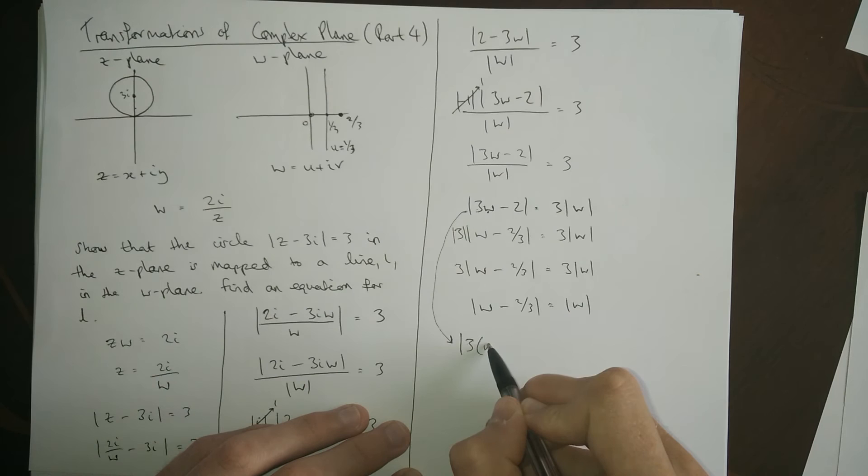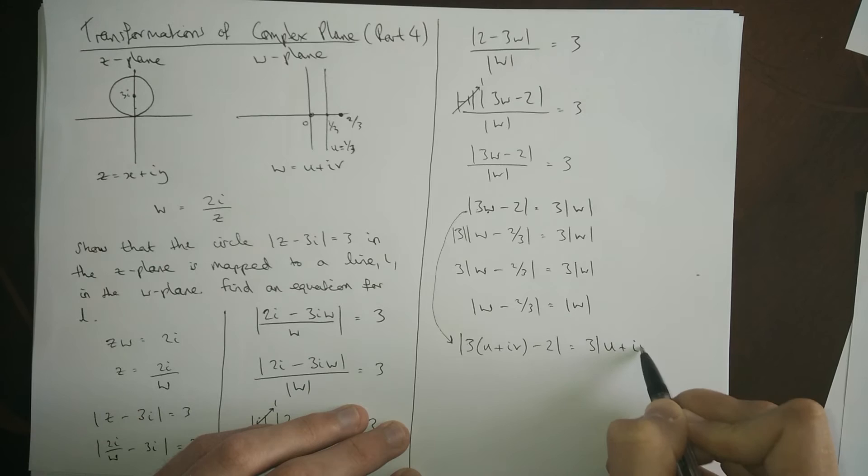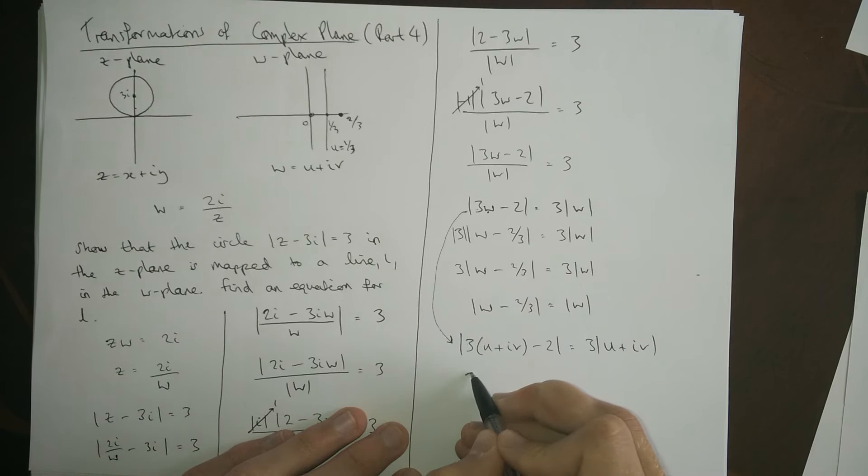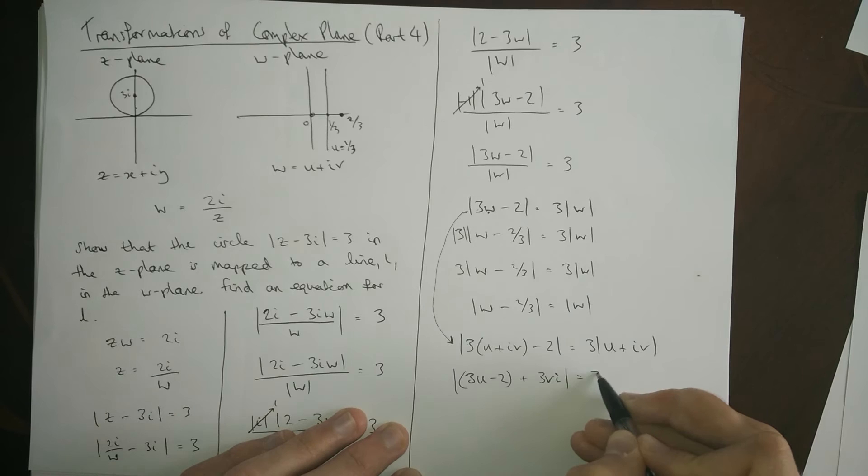So, we take the W, we change it for u plus iv. And we change this W to be u plus iv. We then do the moduluses. Well, before that we need to group together here the real imaginary terms. So, we've got 3u minus 2 is one of the terms. And over here we've got plus 3vi as being the other term. Just here we've got 3 times u plus iv.